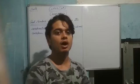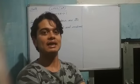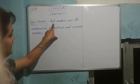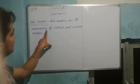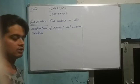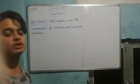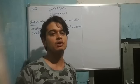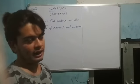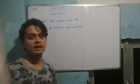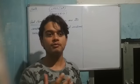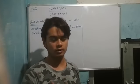First of all, what is a real number? A real number is a combination of rational and irrational numbers. A number which is in the form of P upon Q.